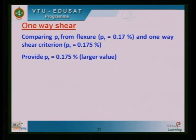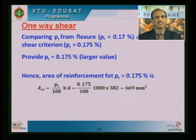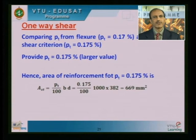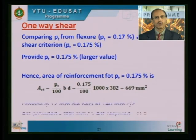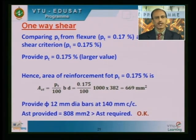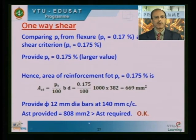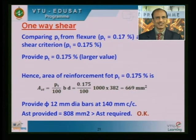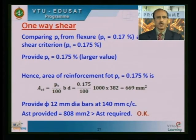Converting Pt = 0.175 percent to area of reinforcement: Ast = (Pt / 100) × B × d = (0.175/100) × 1000 × 382 = 669 mm² per meter width. I provide 12 mm diameter bars at a spacing of 140 mm center to center, which gives an Ast provided of 808 mm², greater than the required 669 mm². This reinforcement is provided in both directions — along X and Y — so the same reinforcement mesh is provided in both orthogonal directions.